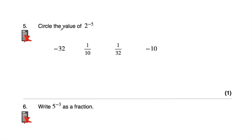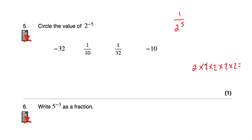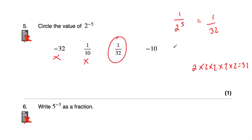Question 5 says: circle the value of 2 to the power of negative 5. We do 1 over 2 to the power of 5. 2 times 2 times 2 times 2 times 2: that's 4, times 2 is 8, times 2 is 16, times 2 is 32. So the answer is 1 over 32 — not negative 32, not a tenth, not negative 10.